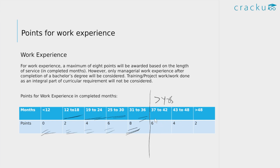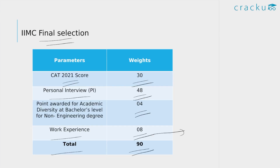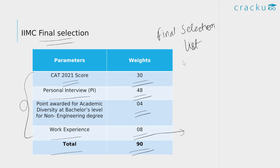If your work experience is between 37 to 42 months, you will be awarded 6 points. If it's between 43 to 48 months, you will be given 4 points. And if it's greater than 4 years, you will be given only 2 points. A final composite score will be calculated based on these parameters, and a final selection list will be made for each category. This is the latest selection criteria of IIM Calcutta for the 2-year full-time MBA program for the 2022-24 batch. Thank you so much.